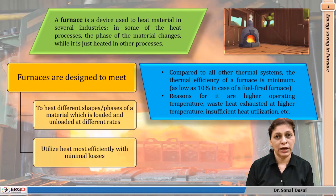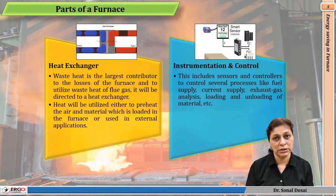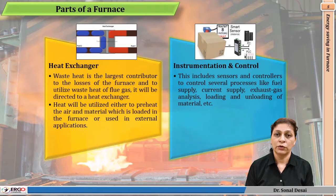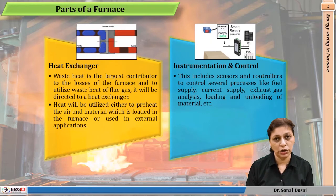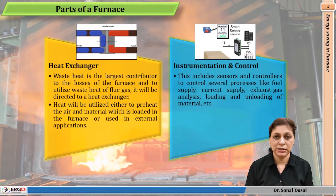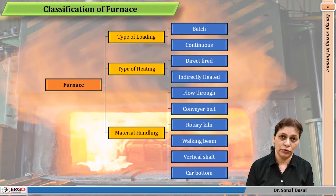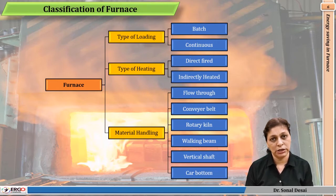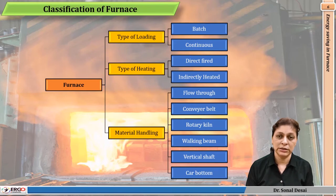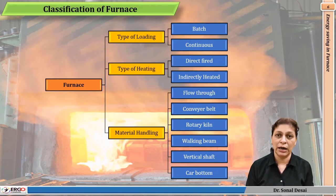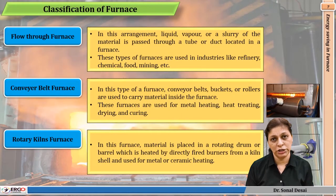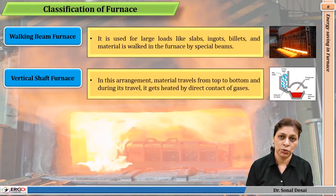Prior to that, there is a discussion about the internal construction of the furnace — which parts it is made of, how they operate, and their classifications. Basically, a furnace can be of a batch type or a continuous loading type. Both types have different handling mechanisms, and different types of arrangements are discussed along with their comparisons.